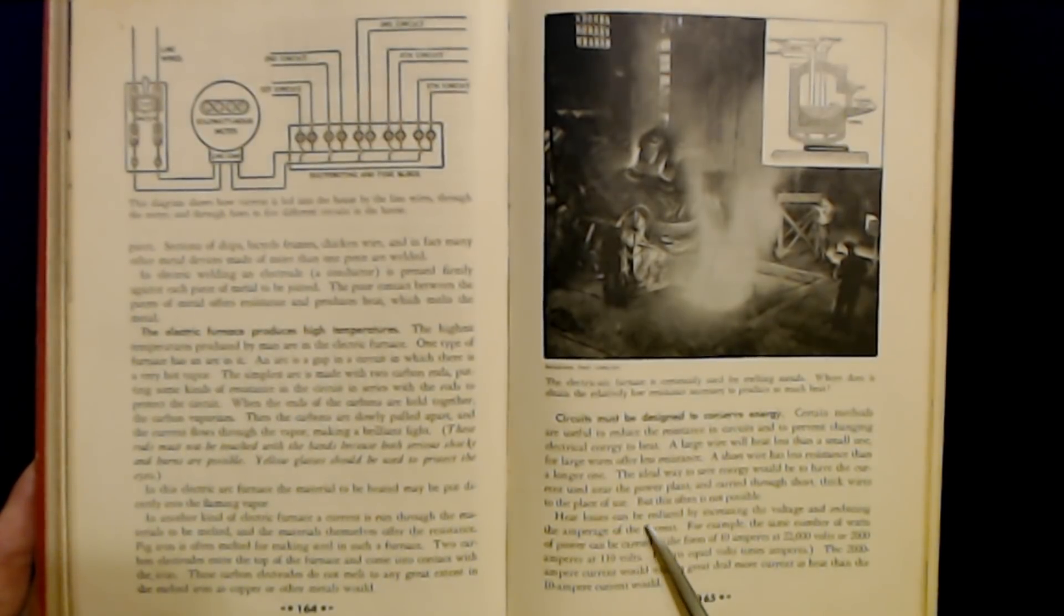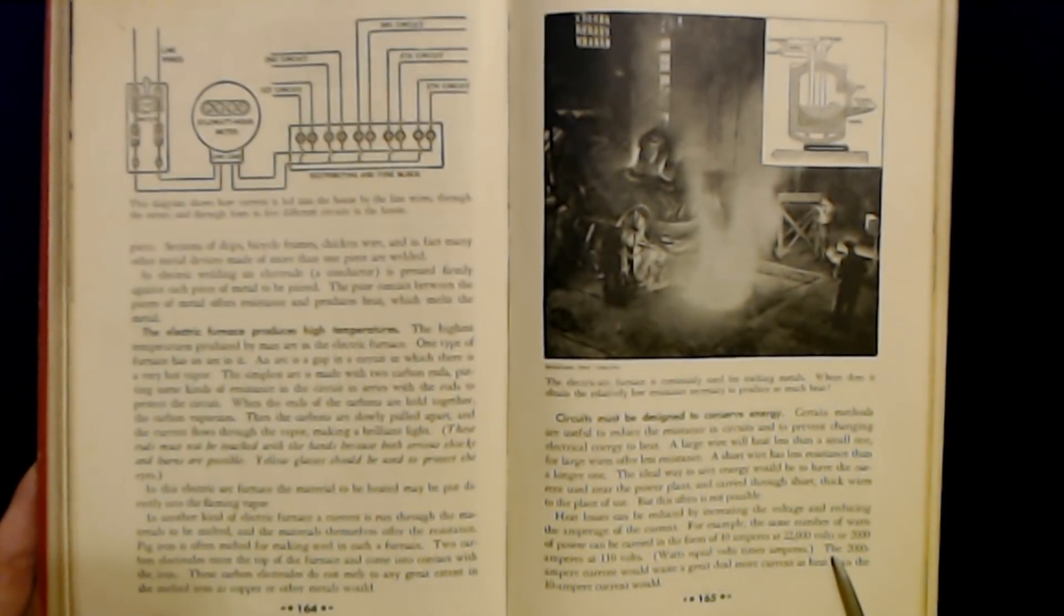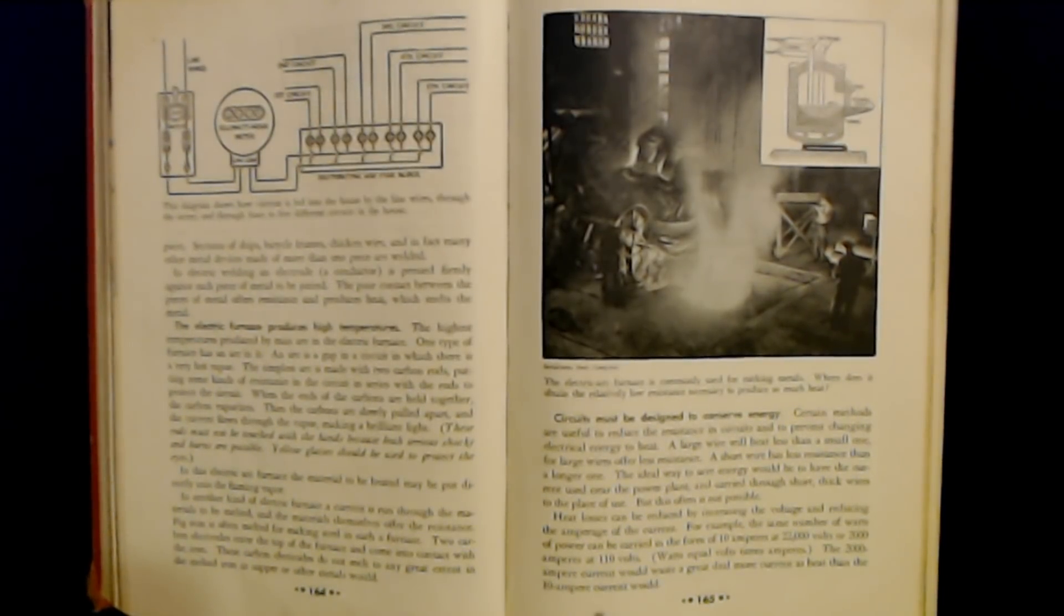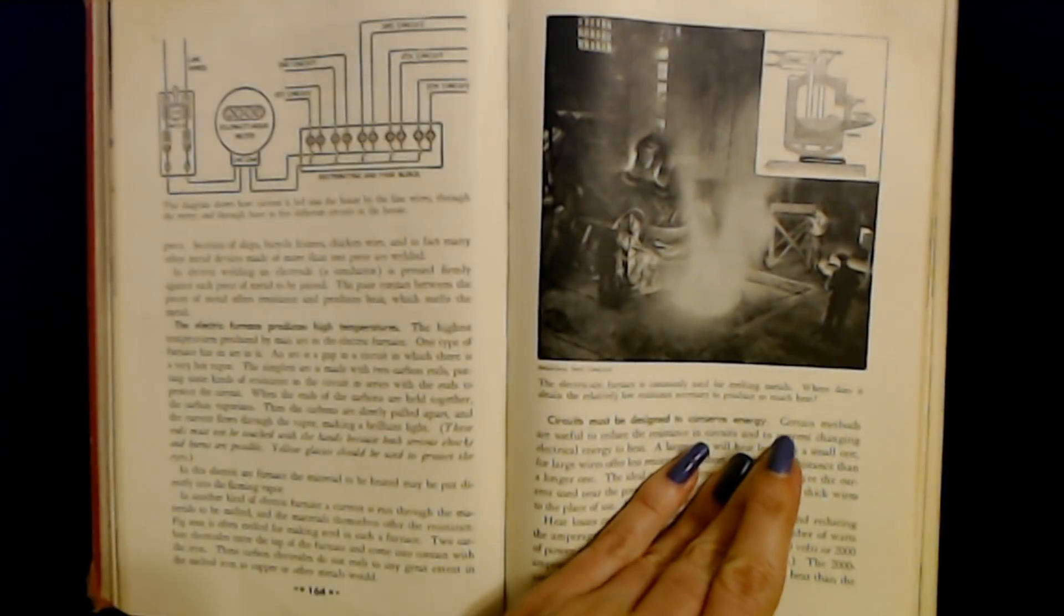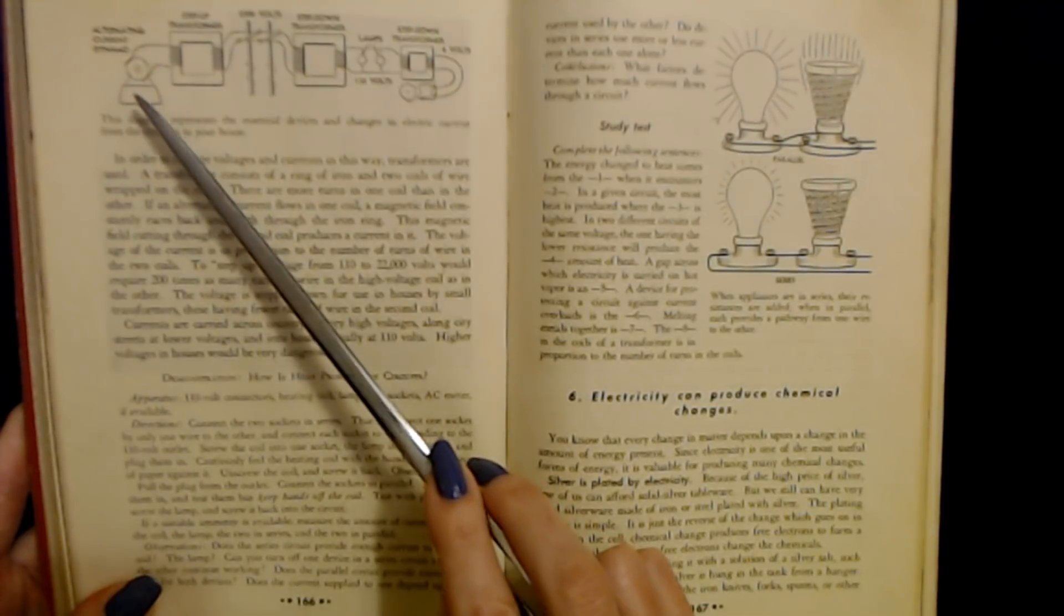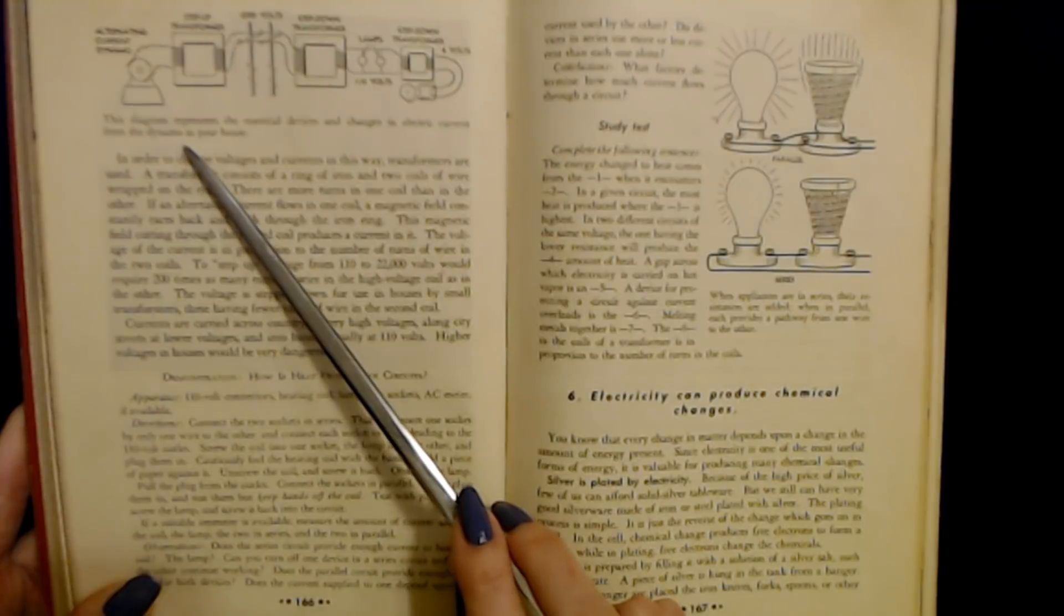Heat losses can be reduced by increasing the voltage and reducing the amperage of the current. For example, the same number of watts of power can be carried in the form of 10 amperes at 22,000 volts or 2,000 amperes at 110 volts. Watts equal volts times amperes. The 2,000 ampere current would waste a great deal more current as heat than the 10 ampere current would.